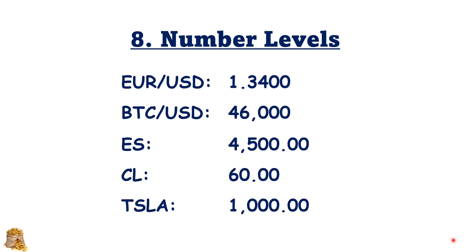Round numbers are also very good levels. For example, for the EURUSD currency, 1.3400 will definitely be a very good support or resistance level. For Bitcoin, 46,000. For ES Mini S&P 500, 4,500 points. For Crude Oil, $60, or Tesla, $1,000. These are also targets for institutional investors because they are not seeking profit actively, but they are hedging their positions. So these levels will be very important for them.